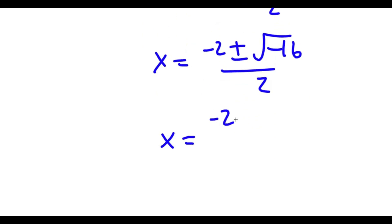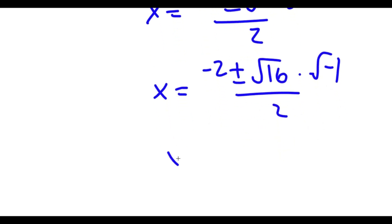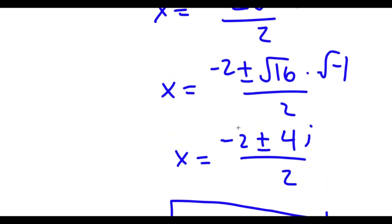The square root of negative 16 is the same as the square root of 16 times the square root of negative 1, and the square root of negative 1 is i. So I have negative 2 plus or minus 4i over 2, which equals negative 1 plus or minus 2i. So those are two more solutions.